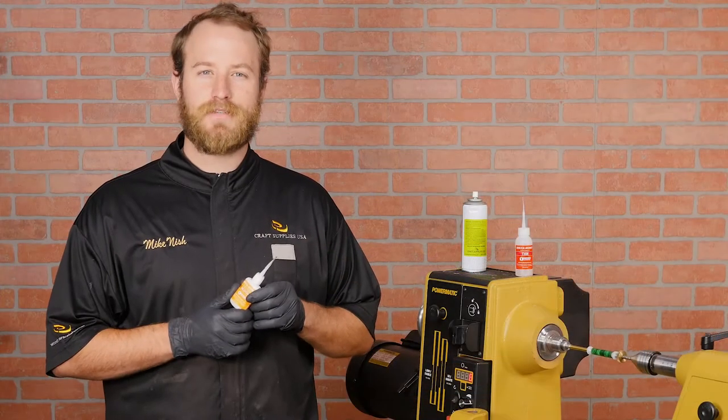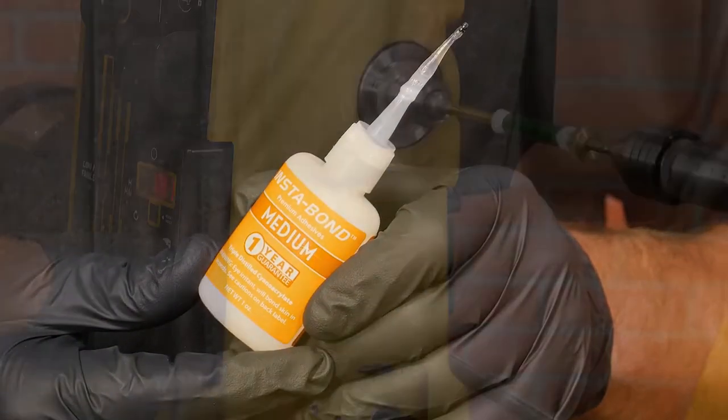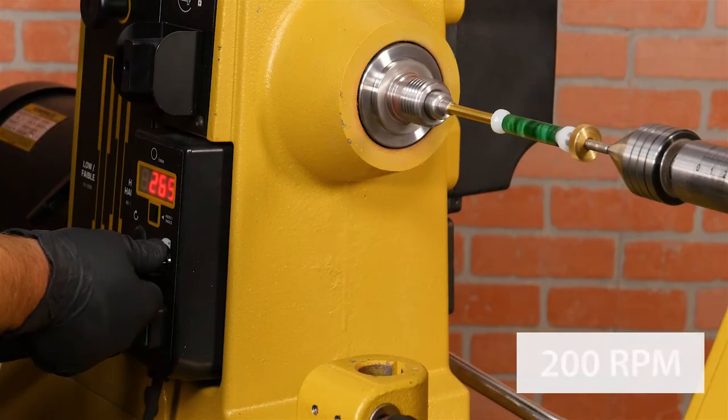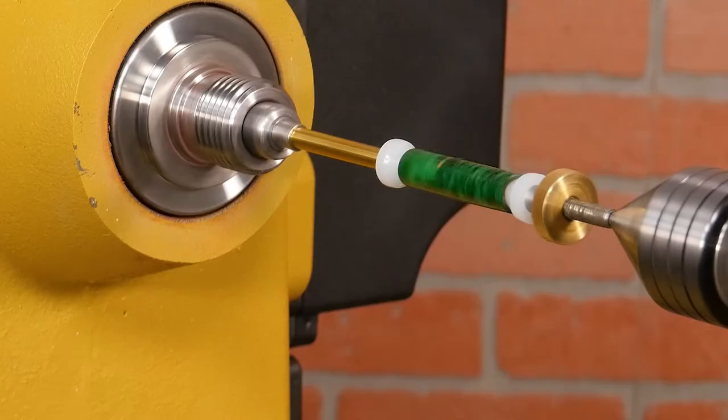For the rest of the process we'll be using medium CA because it builds up quickly and doesn't require heavy sanding. Now turn the lathe down to around 200 RPM. If it is going too fast, the glue will cure faster than you can spread it, so keep the speed low.